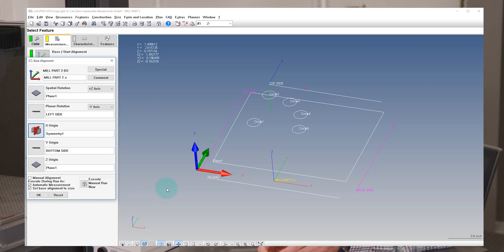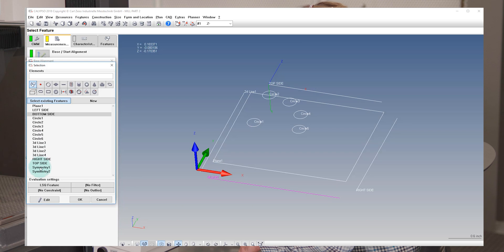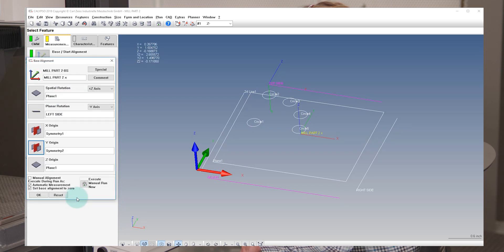Now you can see in the workspace, there's a temporary coordinate system. If we stopped right here, that's where the coordinate system would be. It'd be in the bottom center of the part. That's not what we want. We're going to go to Y origin and then choose symmetry two and hit OK.